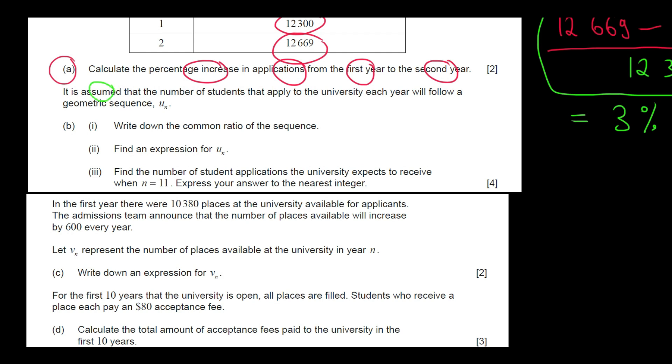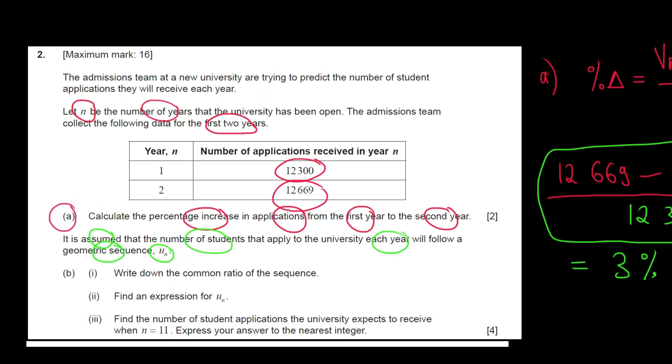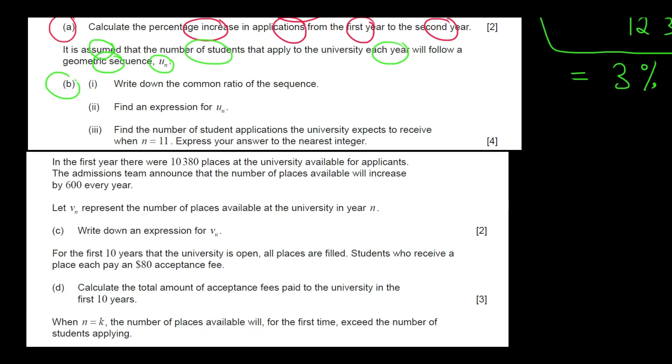It is assumed that the number of students that apply to the university each year will follow a geometric sequence, UN. Will follow a geometric sequence, UN. Question B, I, write down the common ratio of the sequence. Okay,